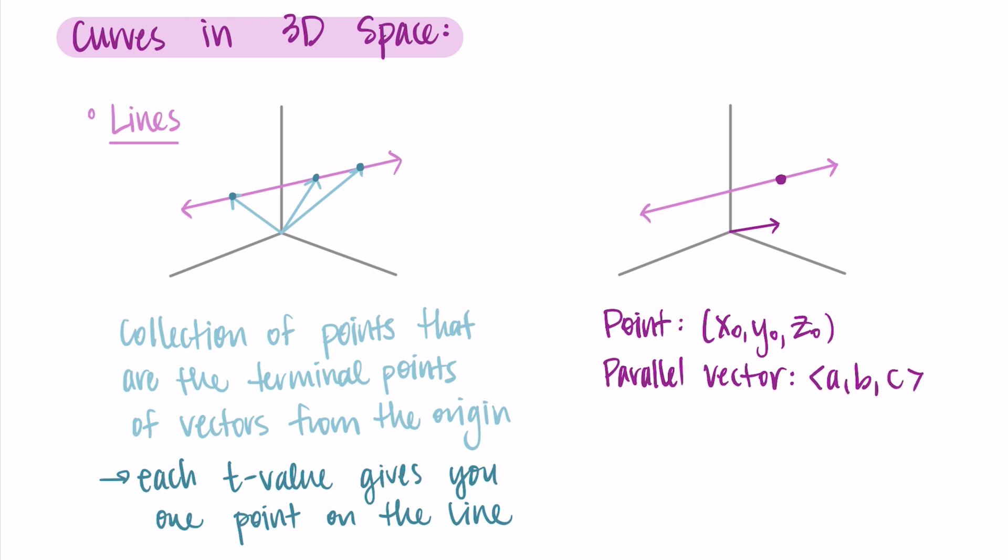Then we can write the equation of the line as r(t) equals the vector x(t), y(t), and z(t). So the x, y, and z components rely on that parameter t, and each t value will correspond to one point on that line. And what we end up with is x₀ plus a times t in the first component, the x component, then y₀ plus b times t in the y component, and z₀ plus c times t in the z component.